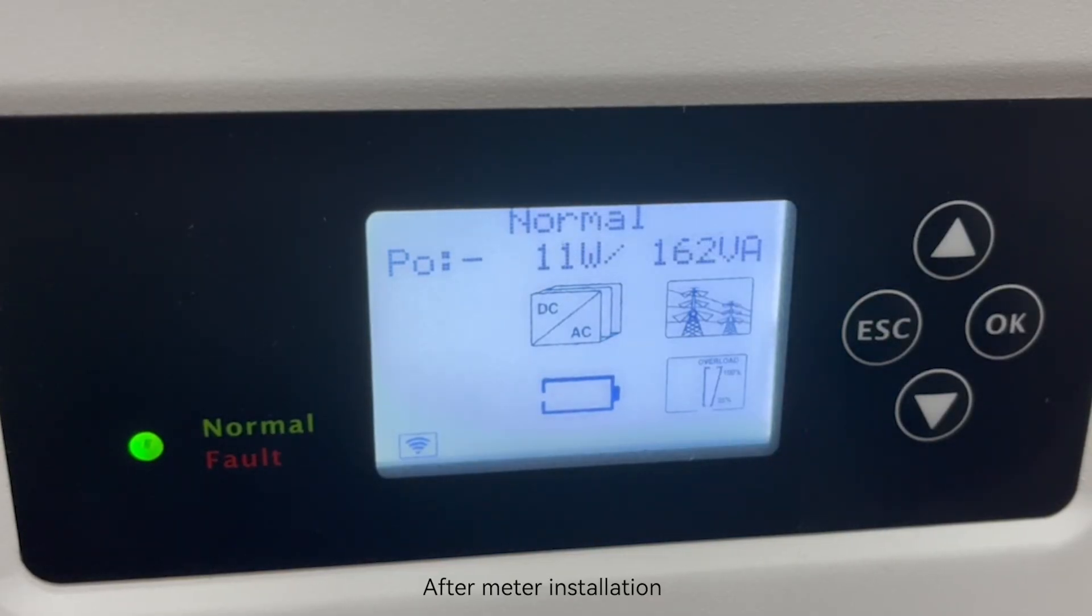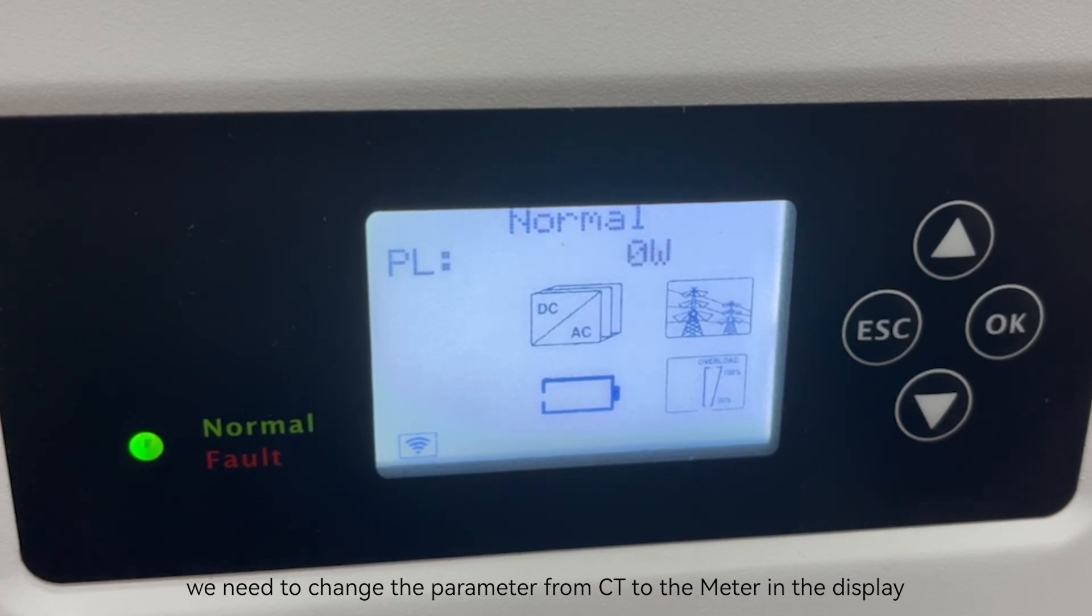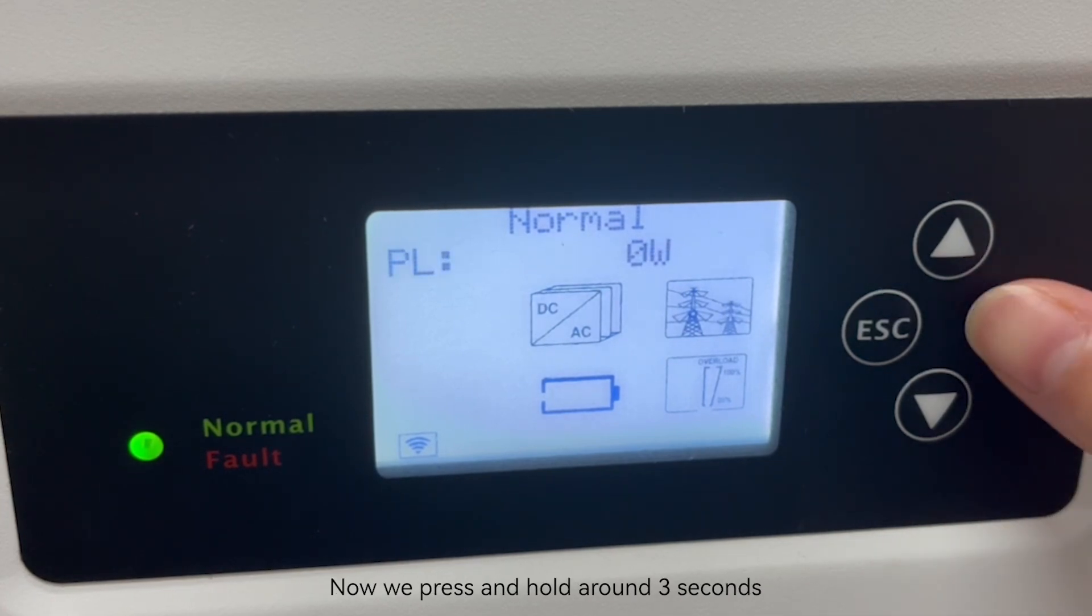After meter installation, we need to change the parameter from CT to meter in the display. Press and hold for around 3 seconds.